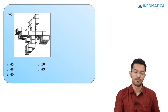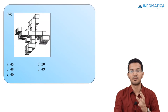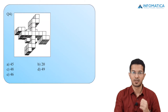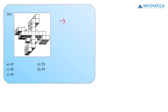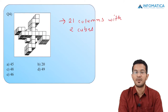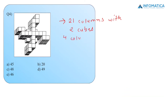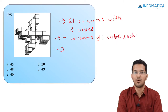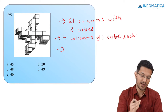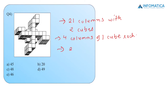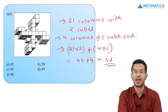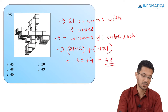Now students we are going to the 4th MCQ. There is a complex figure. There are 21 columns containing 2 cubes each, and then 4 columns of 1 cube each. So the total number of cubes is 21 multiplied by 2 plus 4 multiplied by 1, giving 42 plus 4 which is 46. So the answer to this question is option E.